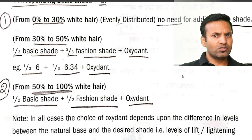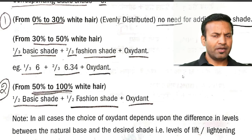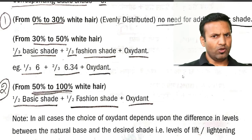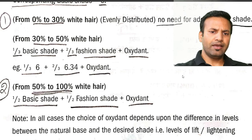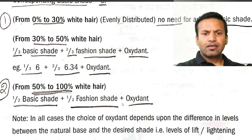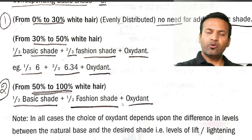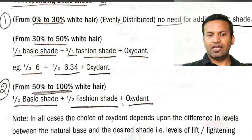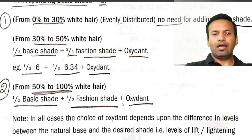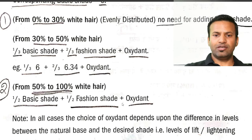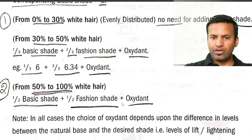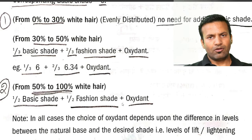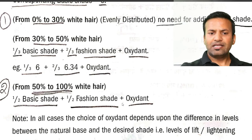तो यहाँ पे हमें oxidant कौन सा लेना पड़ेगा, developer कौन सा लेना पड़ेगा? सफेद बालों में हमेशा लगता है 20 volume। तो हमें हमेशा 20 volume ही use करना है। उसके बाद दूसरे number पे आ जाते हैं: 30 to 50% gray hair। 30 to 50% gray hair में आपको one-third basic shade लेना है, second-third fashion shade plus oxidant — तो यहाँ पे 6 number लेंगे one-third, plus 6.34 लेंगे second-third, and oxidant — oxidant मतलब developer।